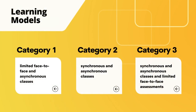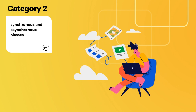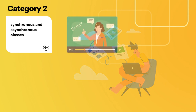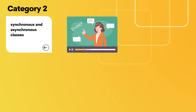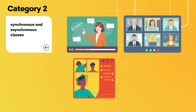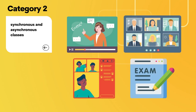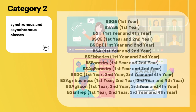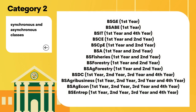Category 2 is a combination of synchronous and asynchronous classes. This is the learning model we have been implementing for the past two years. Example class activities are recorded video lectures, online consultations, home-based activities, and online exams. Programs under this category are the following.